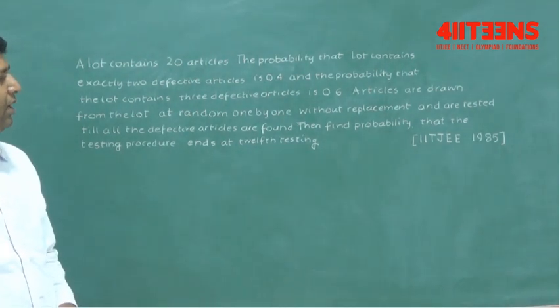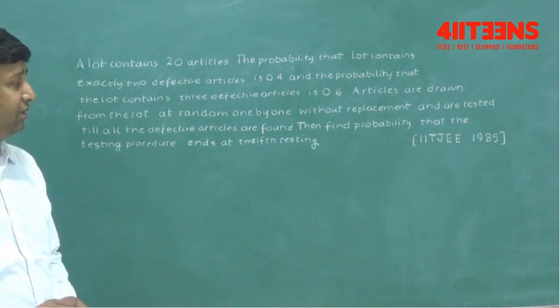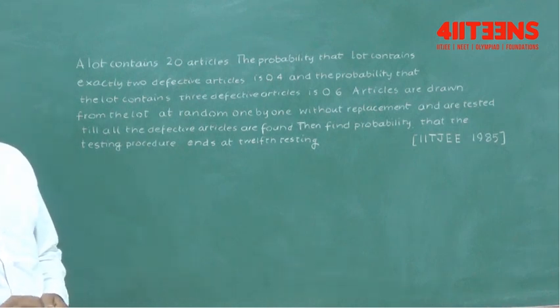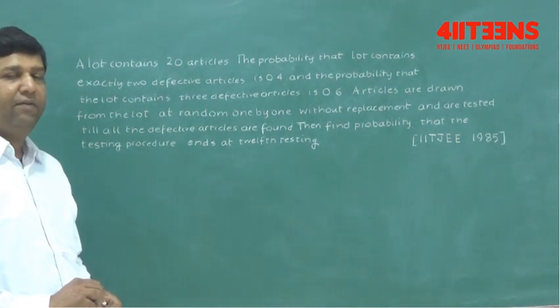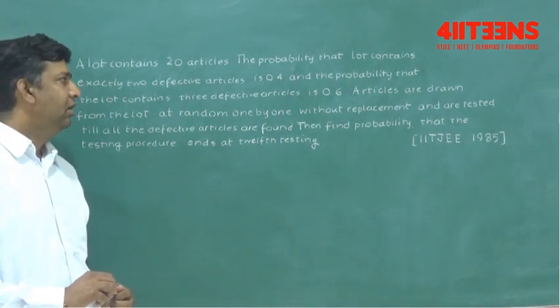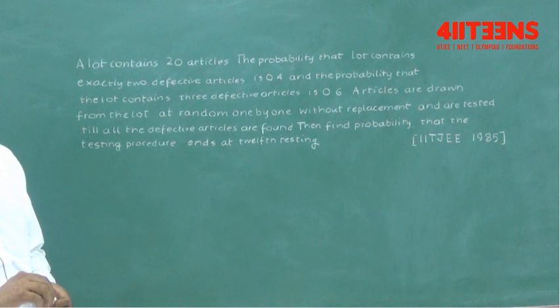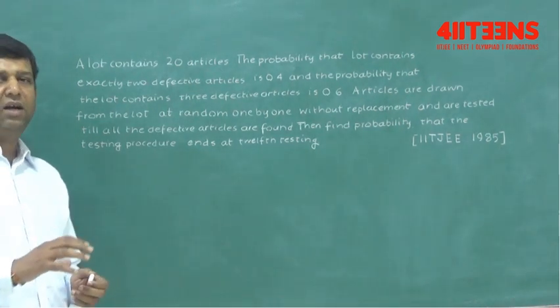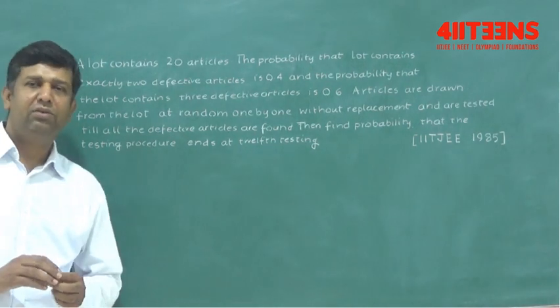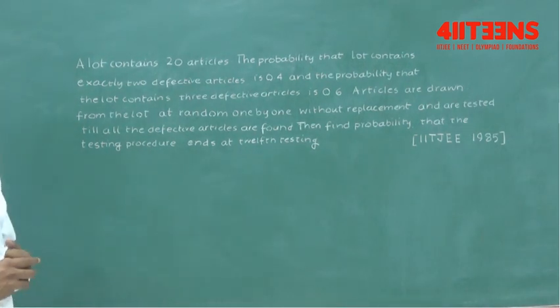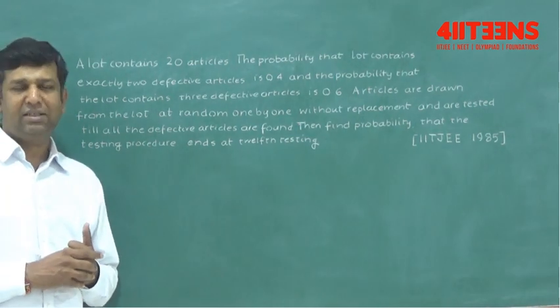So today we are going to discuss one problem that came in probability in 1985 in IIT-JEE. It's basically based on total probability and kind of conditional also, but very interesting. Most of the book solutions are given ambiguously, so I'm going to discuss this as fast as possible to help you understand it.